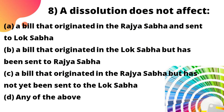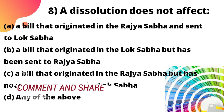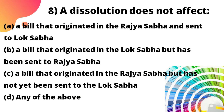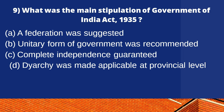A dissolution does NOT affect: option A — a bill that originated in the Rajya Sabha and was sent to Lok Sabha; option B — a bill that originated in the Lok Sabha but has been sent to Rajya Sabha; option C — a bill that originated in the Rajya Sabha but has not yet been sent to the Lok Sabha. Dissolution does not affect such bills. Let's move on to the next question.